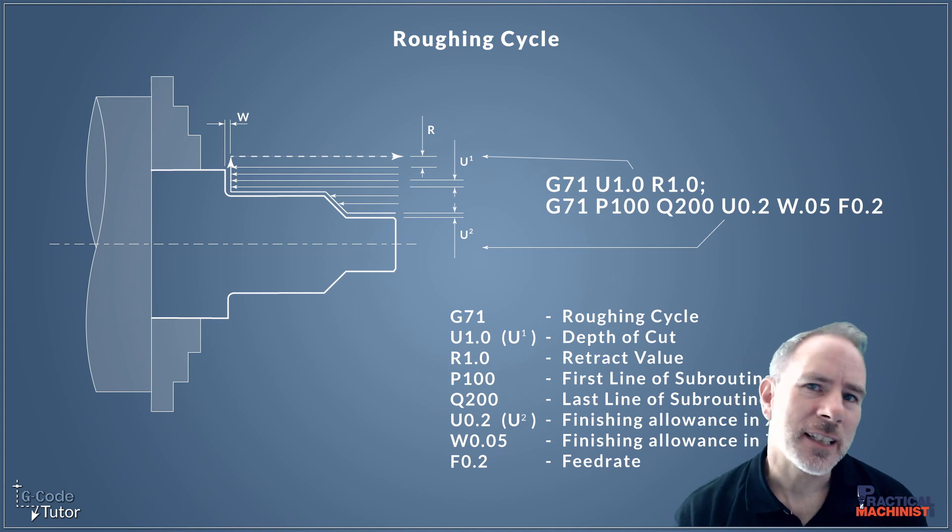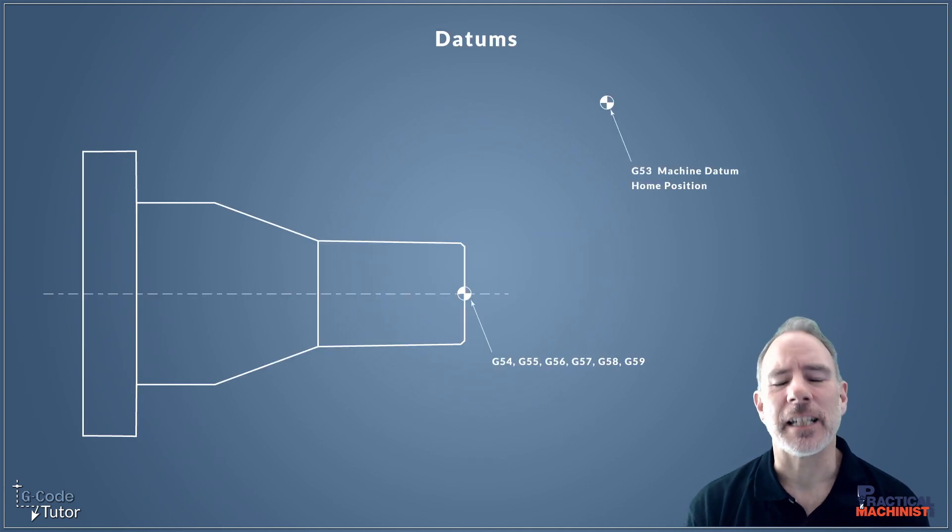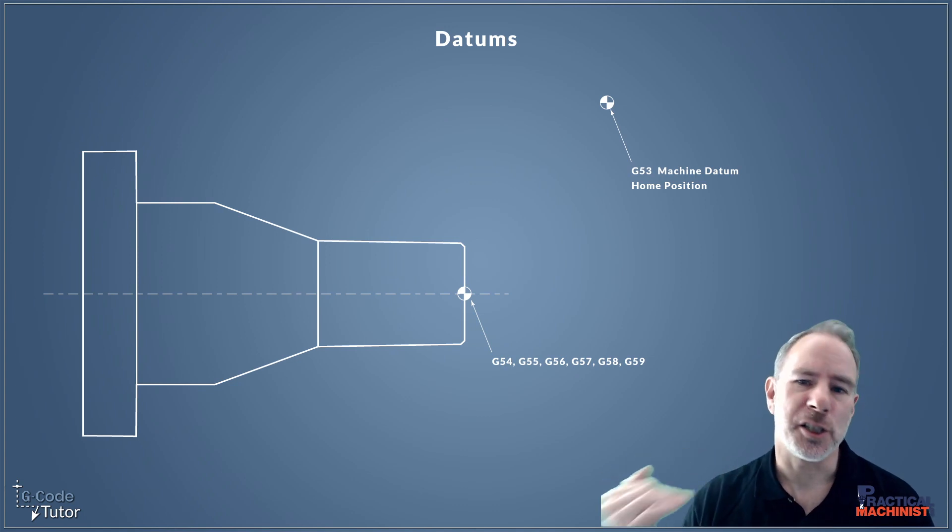Next G-code I want to discuss is G53. The G53 G-code sets the machine home position. We don't edit this position, this is the machine's zero position and quite often where we do a tool change depending on the machine. G53 is the machine's zero point. Once we've finished our sequence, we would move the tool back to the G53 position and quite often perform a tool change in that position.